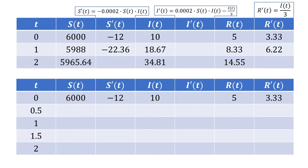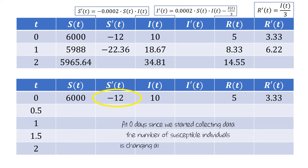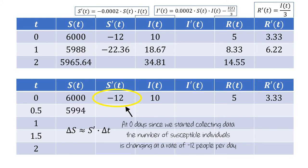Let's think about what s prime at time zero is telling us. This negative 12 means at zero days since we started collecting data, the number of susceptible individuals is changing at a rate of negative 12 people per day. So if s changes at a rate of negative 12 people per day for just a half day, then there should be six fewer susceptible individuals at the end of the half day. In terms of our central relationship, s prime is negative 12 and delta t is a half day, so delta s is negative six. And if we subtract six from 6,000, we'll get 5,994 individuals.